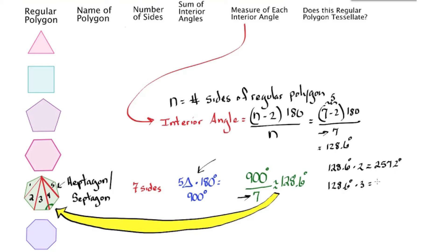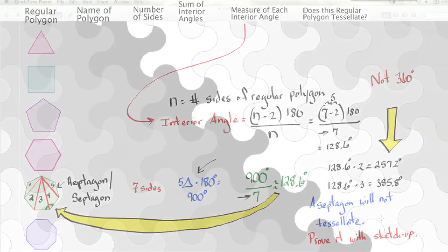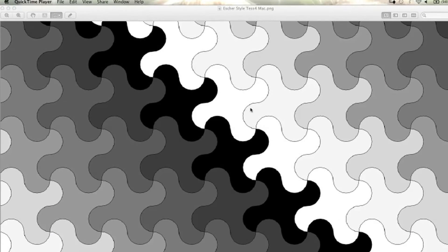If we try putting two together, we get 257.2 degrees — that's too little. If we try three, we get 385.8 degrees — that's too much. Neither gives us 360 degrees, so the septagon will not tessellate. I'd like you to prove it using SketchUp.